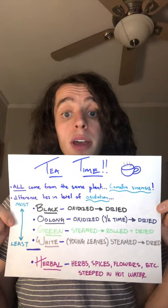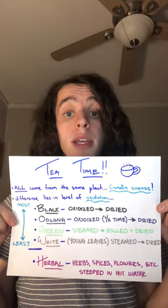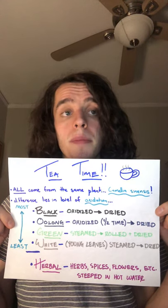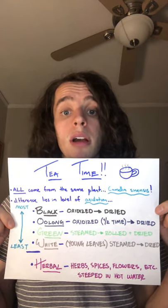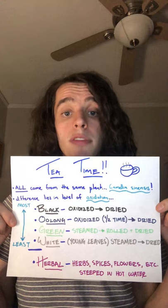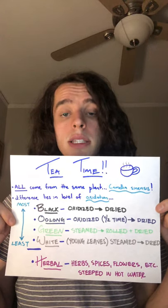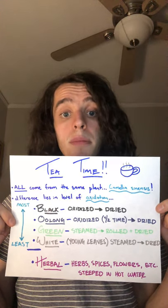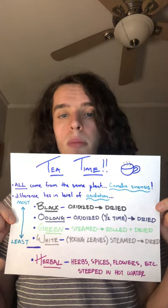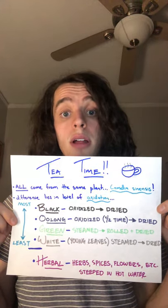Moving on to our final tea on this list — white tea. This goes through a very similar process to green tea, except the leaves used for white tea are specifically much younger. White tea can also sometimes use very young flowering buds. These young leaves are steamed just like our green tea, but they are not rolled before they are dried. That's all the information I have regarding our traditional teas.